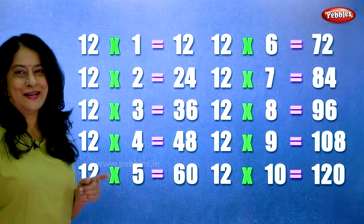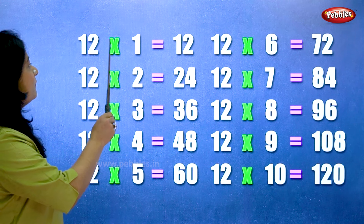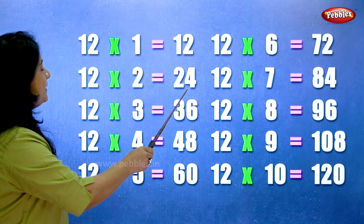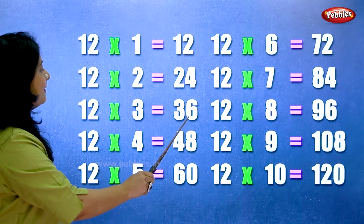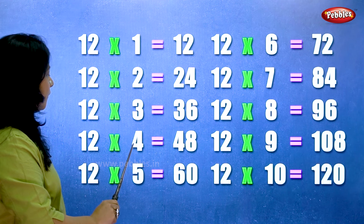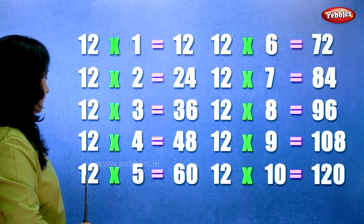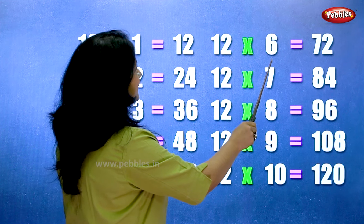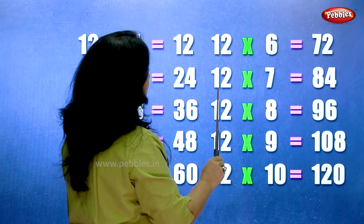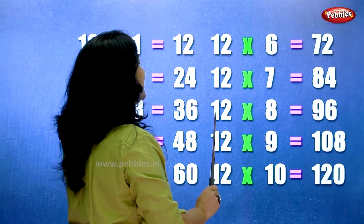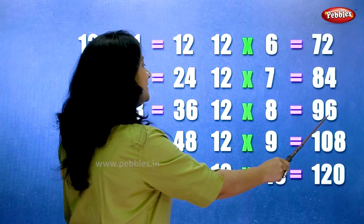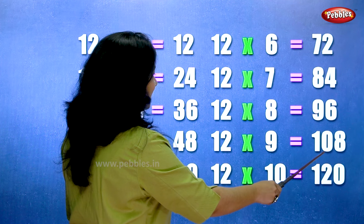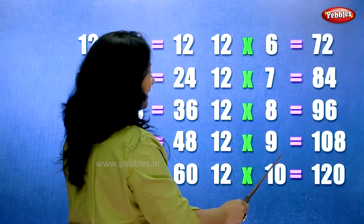Let's learn the table of twelve one more time. Twelve ones are twelve. Twelve twos are twenty-four. Twelve threes are thirty-six. Twelve fours are forty-eight. Twelve fives are sixty. Twelve sixes are seventy-two. Twelve sevens are eighty-four. Twelve eights are ninety-six. Twelve nines are hundred and eight. Twelve tens are one-twenty.